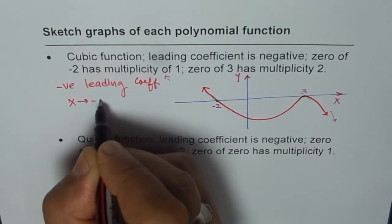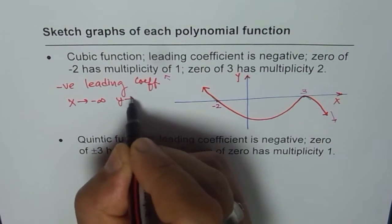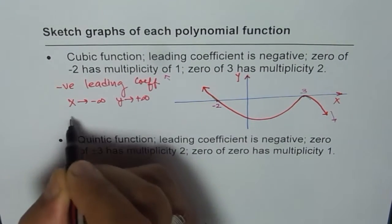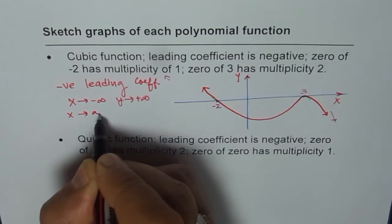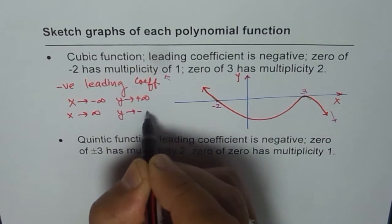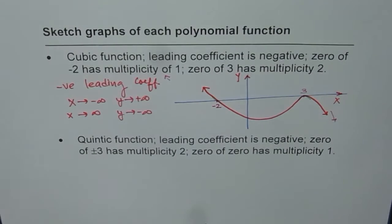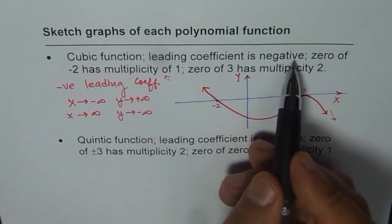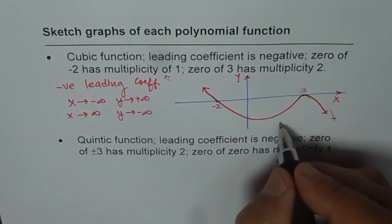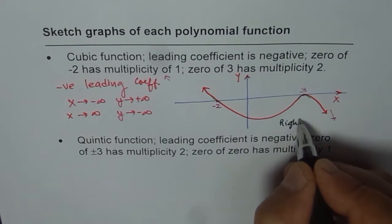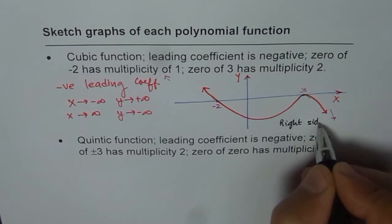As x approaches negative infinity, y approaches positive infinity. As x approaches positive infinity, y approaches negative infinity. I use a term, leading coefficient is negative means right side down. That means right side down.